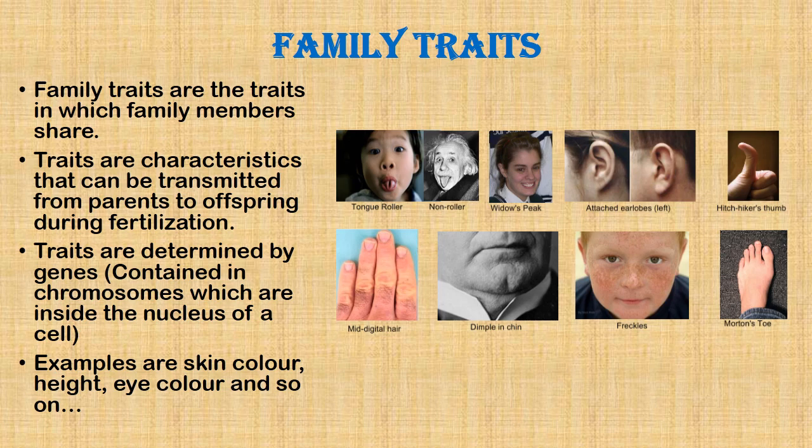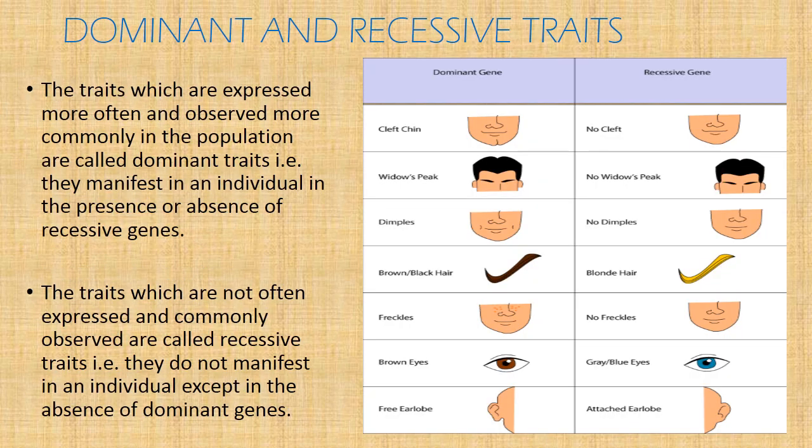From the picture that you have, you see other examples like dimples and chin shape, freckles, tongue rolling, and attached earlobes. Now there are two basic types of traits: dominant traits and recessive traits. Dominant traits are traits which are expressed more often and observed more commonly in the population. They are also manifested in an individual in the presence or absence of recessive genes.